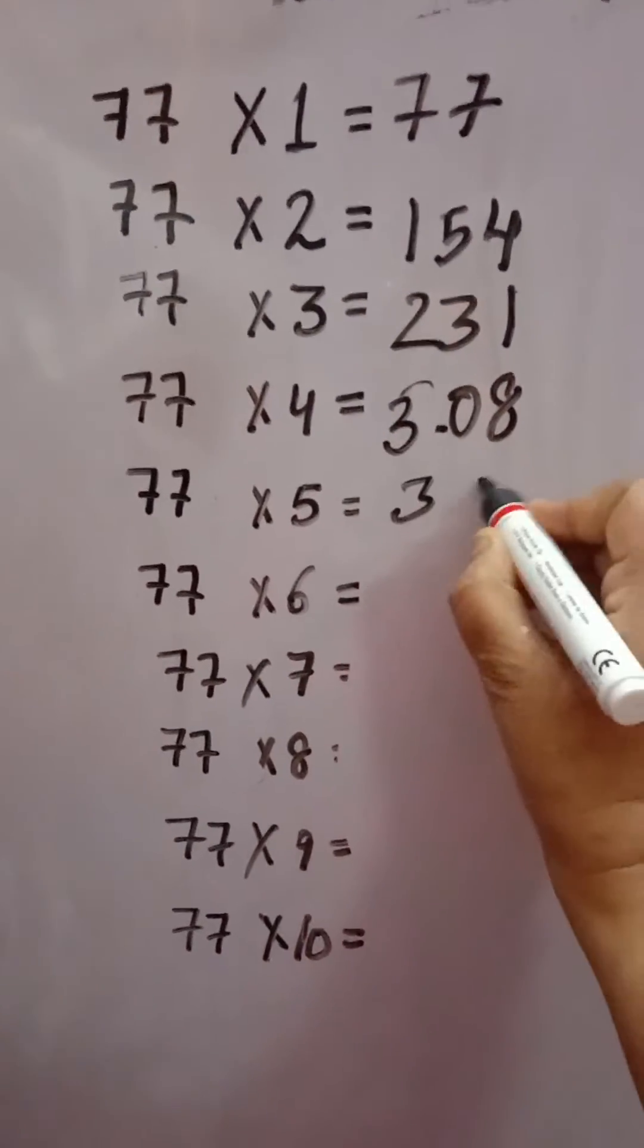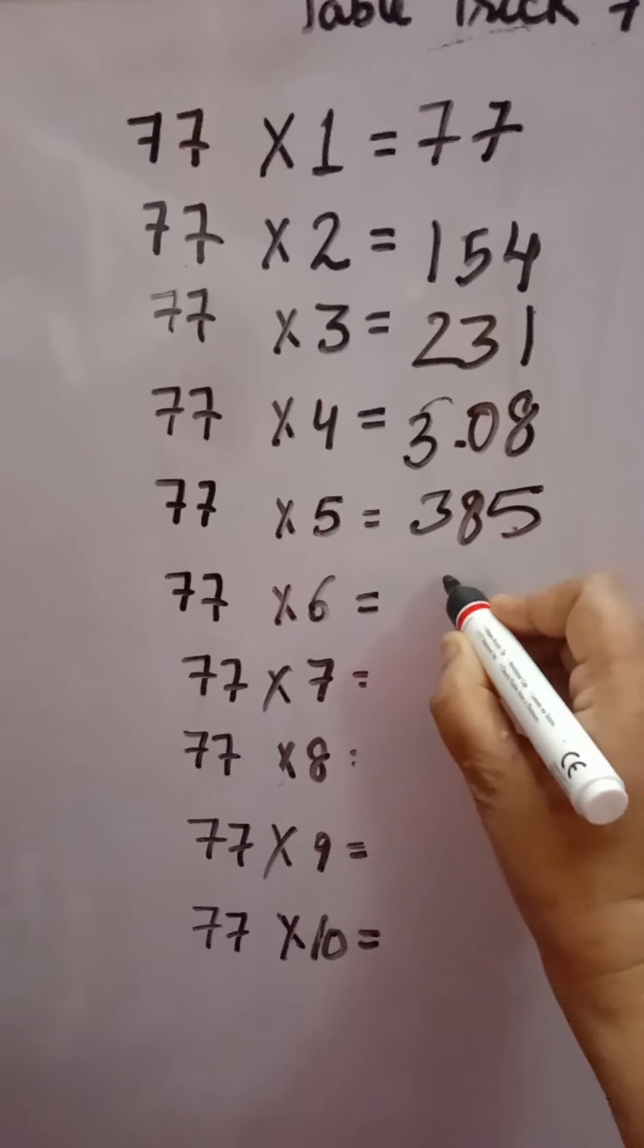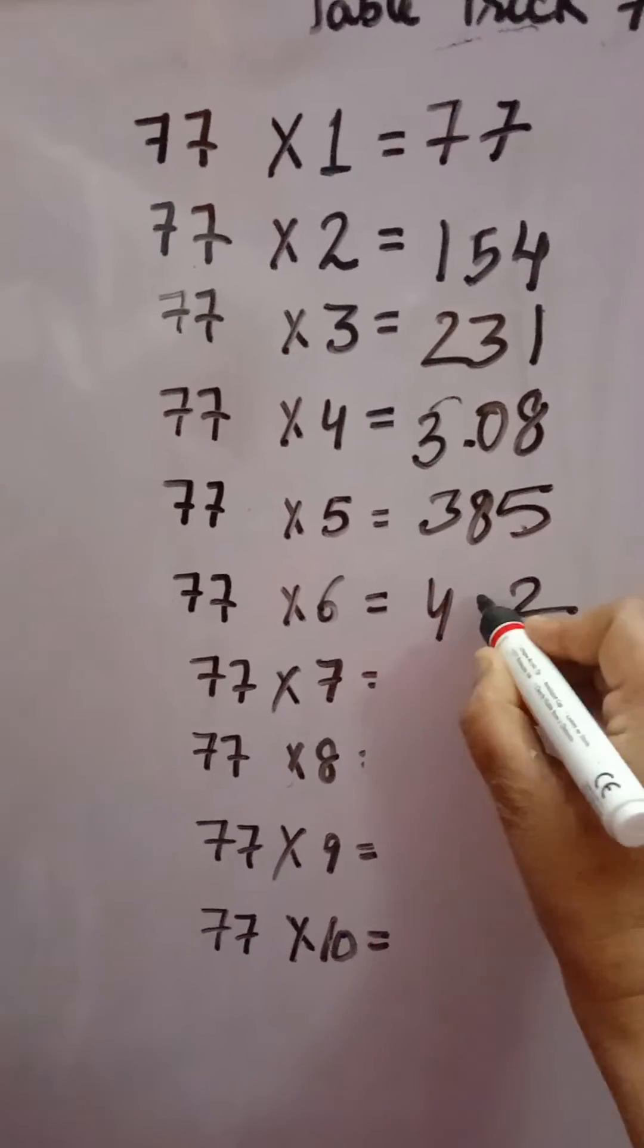7 times 5 is 35, 3 plus 5 equals 8. 7 times 6 is 42, 4 plus 2 equals 6.